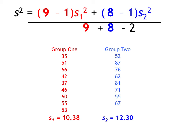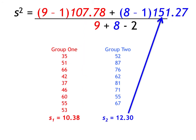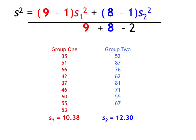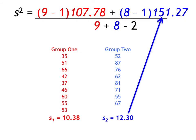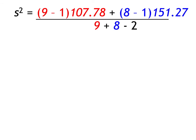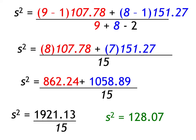The standard deviation for group 1 is 10.38. The standard deviation for group 2 is 12.30. I square the standard deviation for group 1 because I'm putting in the variance, and I do the same thing for group 2. Remember to use your order of operations or you will really mess up. I end up with a pooled variance of 128.07.